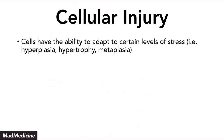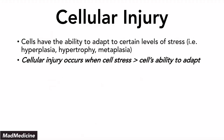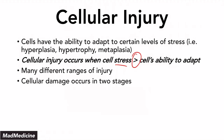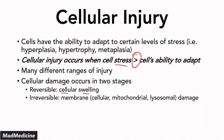Cells have the ability to adapt to certain levels of stress, but when the level of stress placed upon a cell exceeds the cell's ability to adapt, you're going to have cell injury occur. There are many different ranges of cell injury, but what you need to remember is that you have two main stages: the reversible stage, whose hallmark is cellular swelling, and the irreversible stage, where you're going to have membrane damage occurring in not just the cell, but also in the mitochondria and the lysosome.